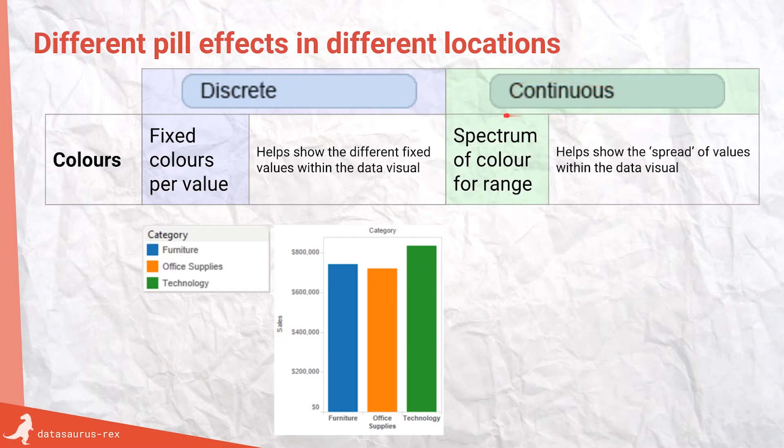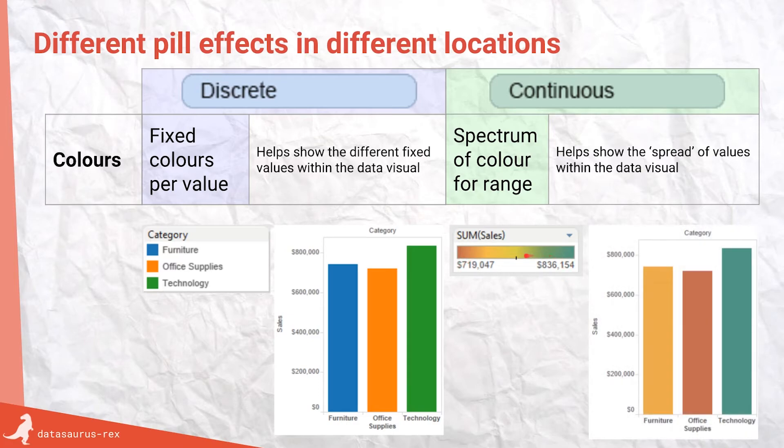But if you put them in continuous, because it's a range, it's more like a spectrum. So from this value to this value, you can have any combination in between and the colors will gradually represent that. Again, putting you in control of visuals. So your eyes are drawn to the good values and the not so good values.